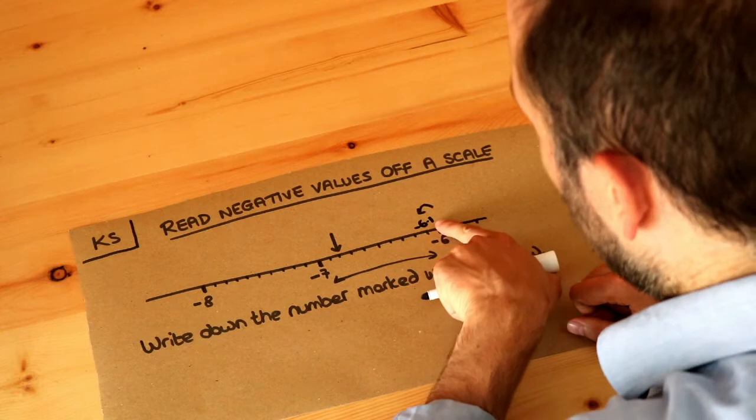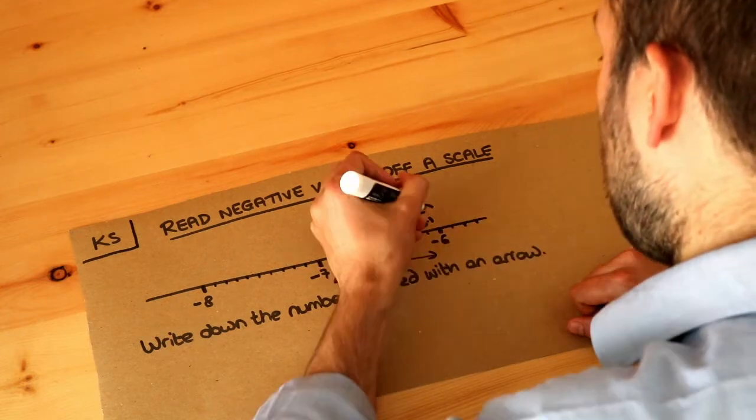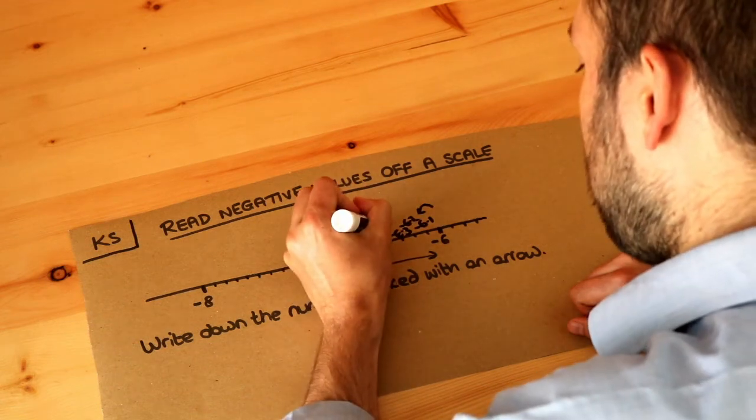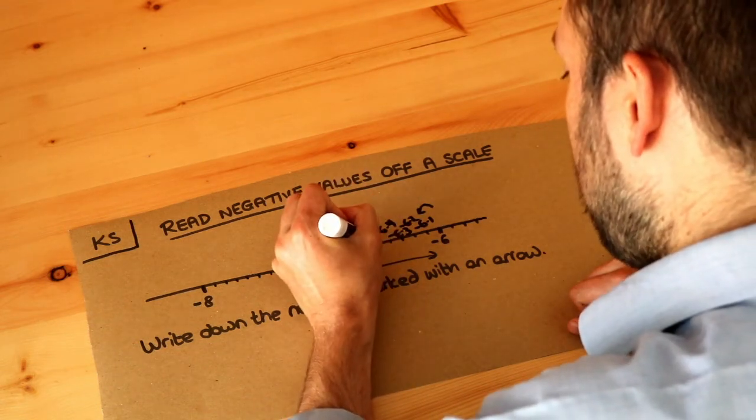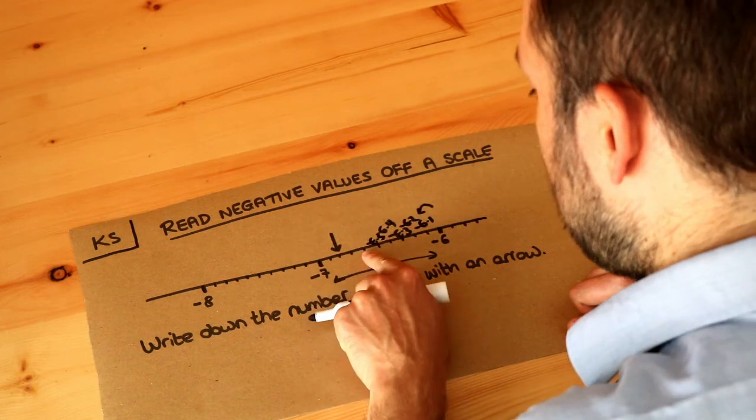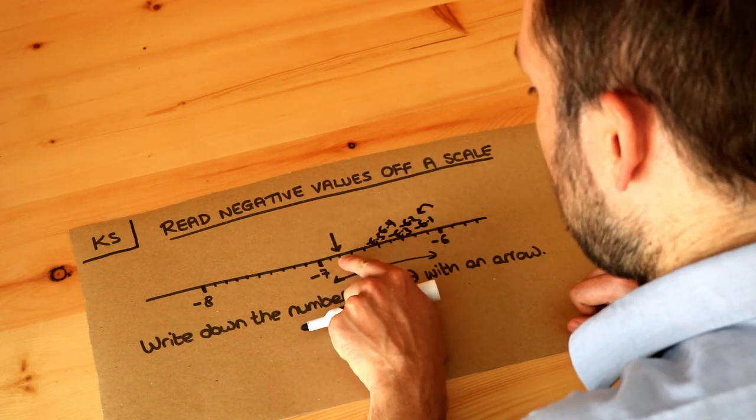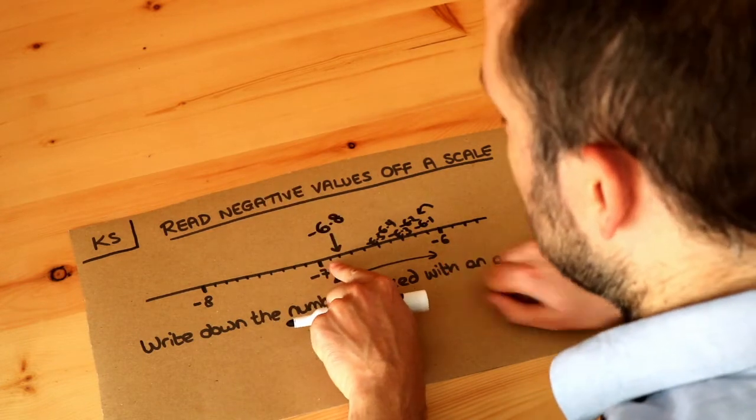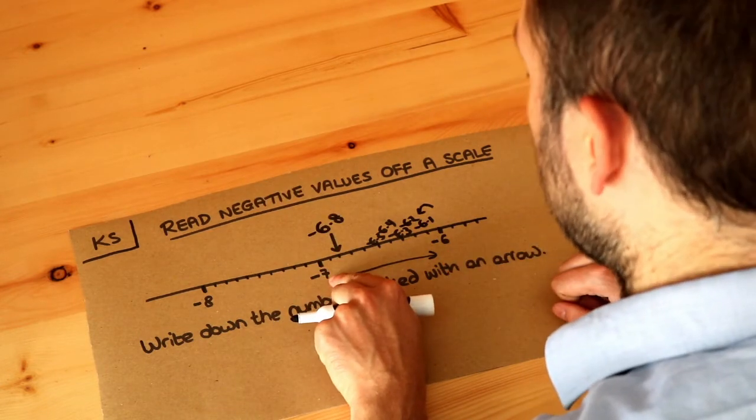Remember point one, the one is the tenths digit, and then it's going to go minus six point two, minus six point three, minus six point four, minus six point five, and then minus six point six, then minus six point seven, then minus six point eight which is the answer, then minus six point nine and then minus seven.